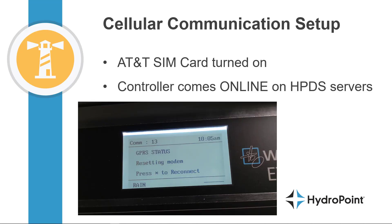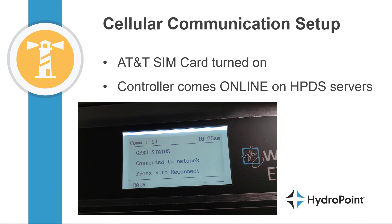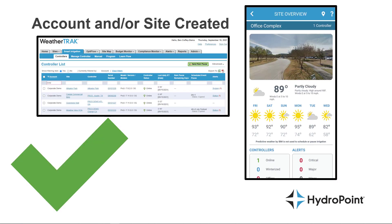One of the most important parts of the controller activation is the setup of the cellular communication. On activation day, your HydraPoint customer service representative will turn on the AT&T SIM card inside that controller, and that's when it connects to the HydraPoint server and you'll see that controller come online. But before you'll see that controller in your WeatherTrack.net account, a HydraPoint customer service agent has to build that account and/or site on the WeatherTrack.net servers.